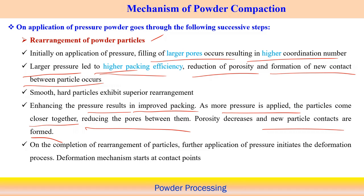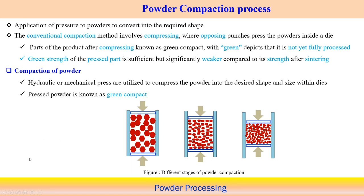Once rearrangement of the particles is complete, if you further increase the pressure, deformation of the process initiates. That means the powder particles will try to deform with further application of load after rearrangement. Deformation mechanism starts at the contact point. The powder compaction process converts the powder into the required shape.